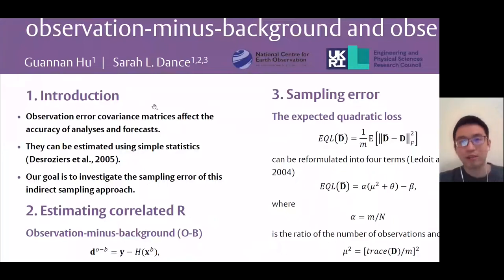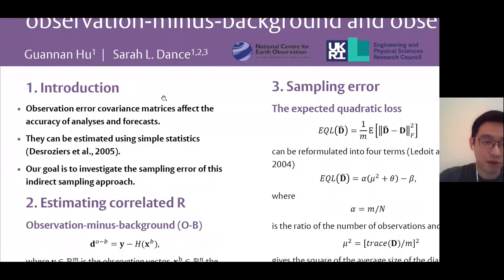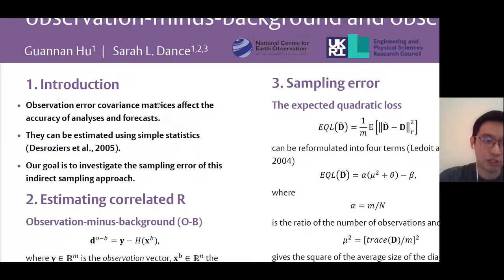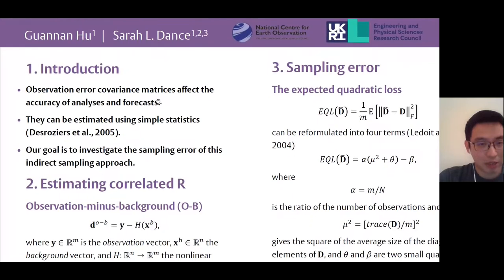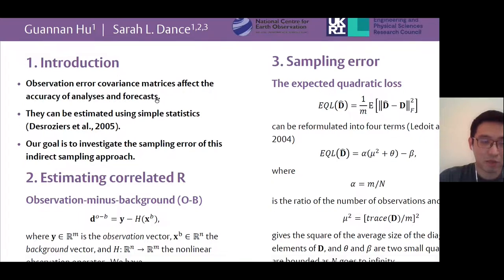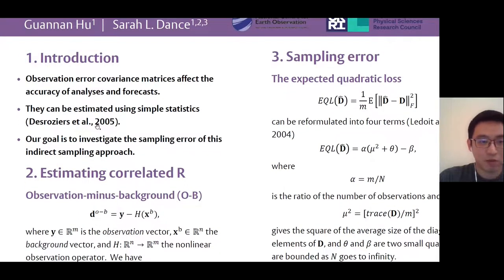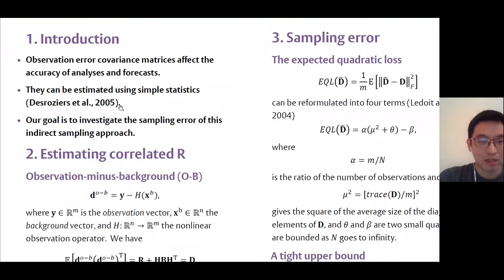The motivation of this work is that observation error covariance matrices affect the accuracy of analysis and forecast, particularly when assimilating remote sensing observations such as geostationary satellites and Doppler radar data. These data are known to hide correlated observation errors. A widely adopted method to estimate correlated observation error statistics is the method proposed by De Rosa et al. In this study, we investigate the sampling error of this indirect sampling approach, a topic that has not been widely investigated previously.